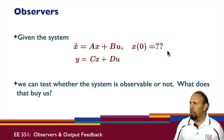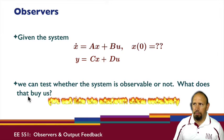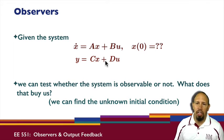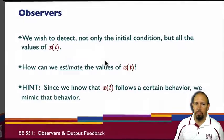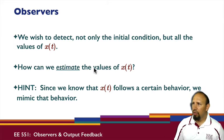Given a system of this form with some non-zero or unknown initial condition, we can test whether the system is observable or not. In general we know that we can find the unknown initial condition, and once we know what the initial condition is we know exactly how the system responds and what x(t) is doing for all time. However, we wish to detect not only the initial condition but all values of t, so if we can't physically measure it, can we at least estimate the values?